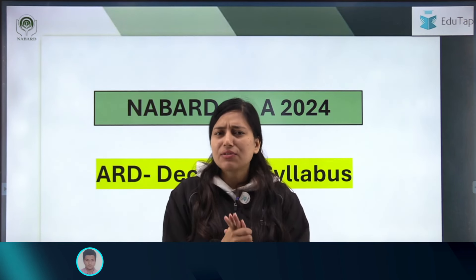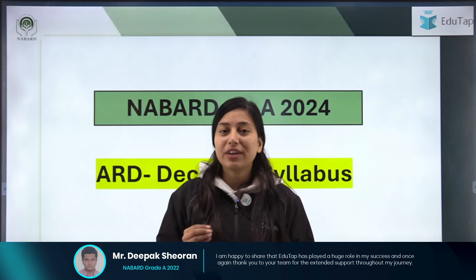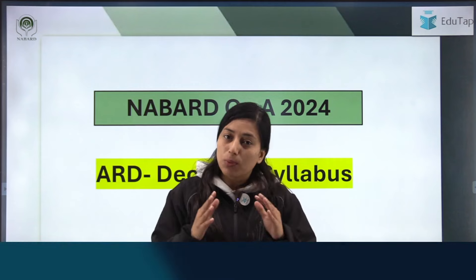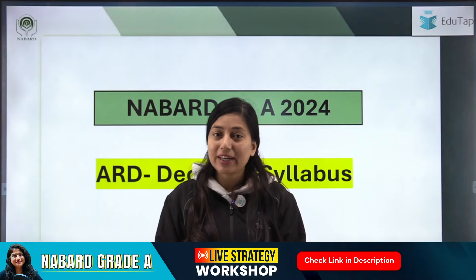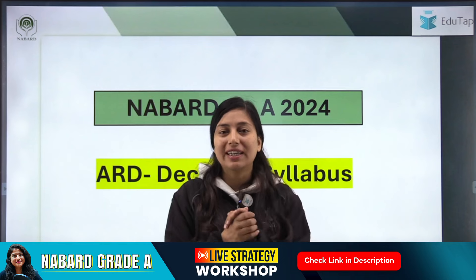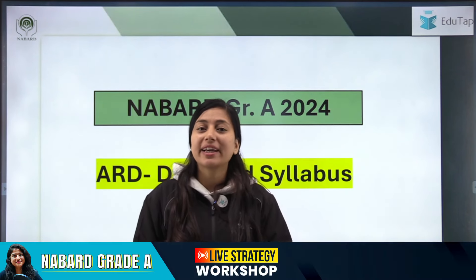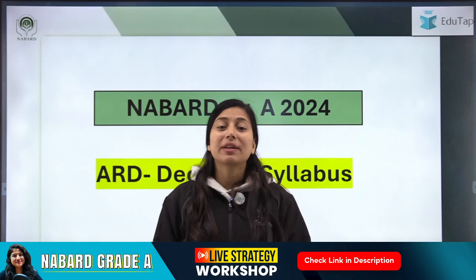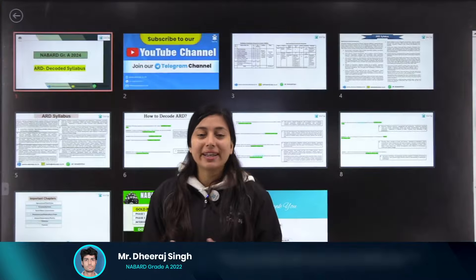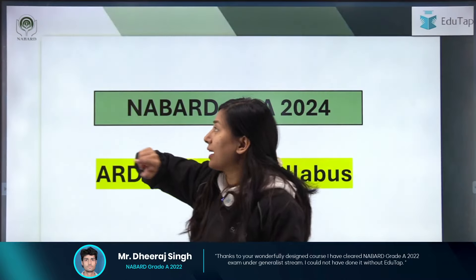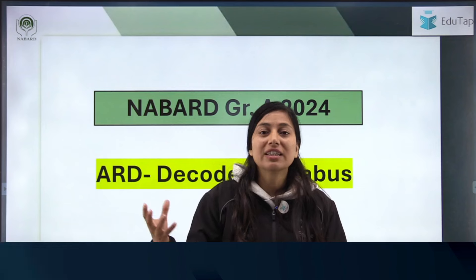ARD is very important for the NABARD exam, whether it's your Phase 1 or Phase 2. If you apply as a generalist, you need to study ARD for both phases. If you apply as a specialist, you still need to study agriculture for Phase 1. The problem is that many students are not from an agriculture background — they are from IT or commerce backgrounds — so agriculture becomes quite a challenge for them.